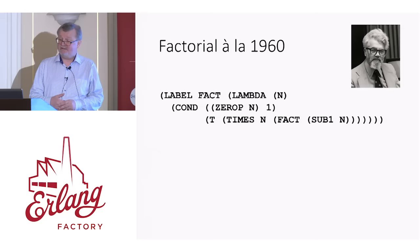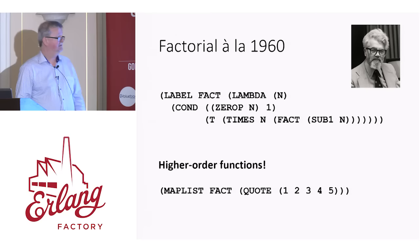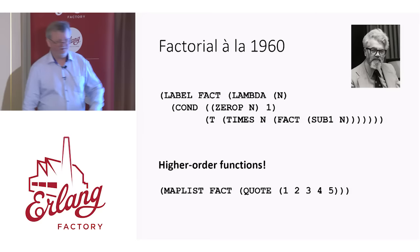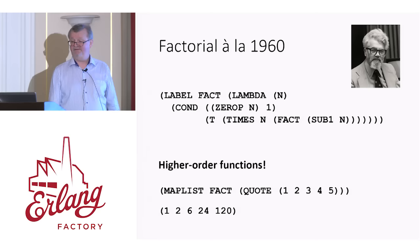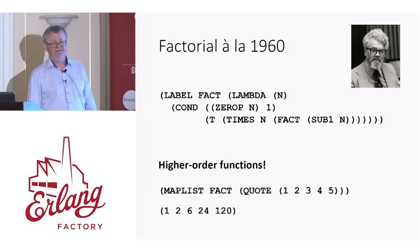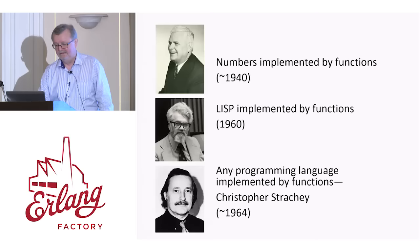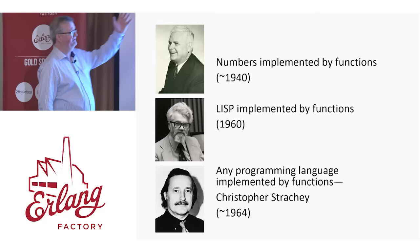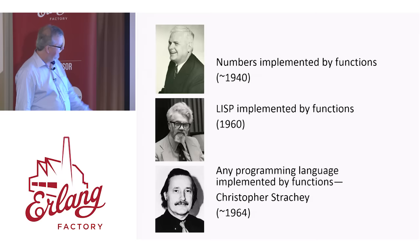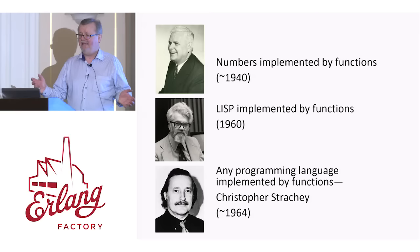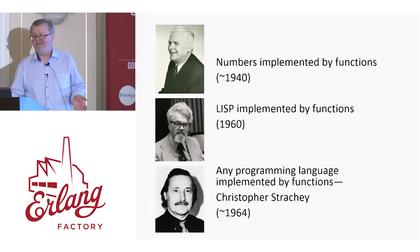Lisp was really very advanced. It also had higher-order functions. There's a function called maplist that nowadays we call map. You could map the factorial function down the list one, two, three, four, five and get the list of factorials. So you could start doing some real functional programming around about 1960. At that time, functional programming among theoretical computer scientists began to become very, very popular. Church had shown you could implement numbers by functions, McCarthy showed you could implement Lisp by functions, and Christopher Strachey began a whole program of work to show that you could implement any programming language by functions — writing an interpreter for any programming language in the lambda calculus as a way to define what programs meant.